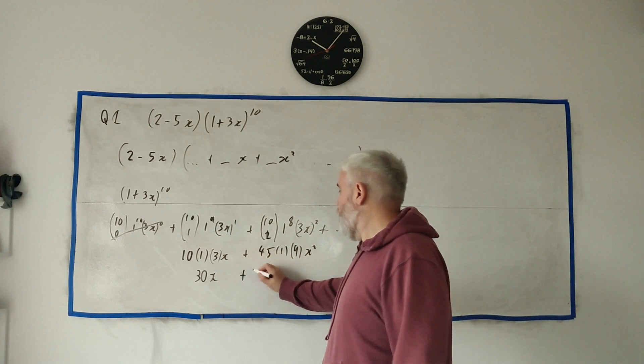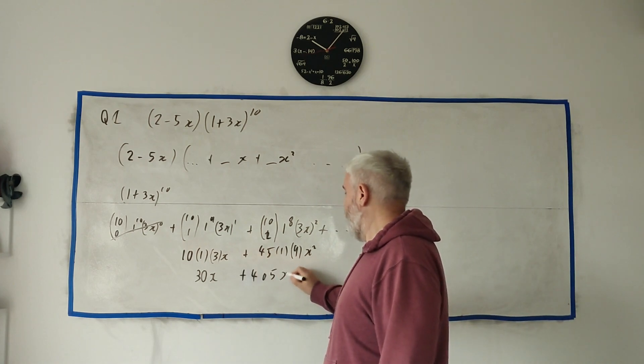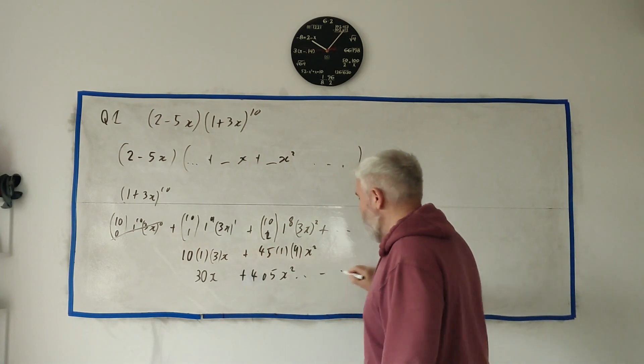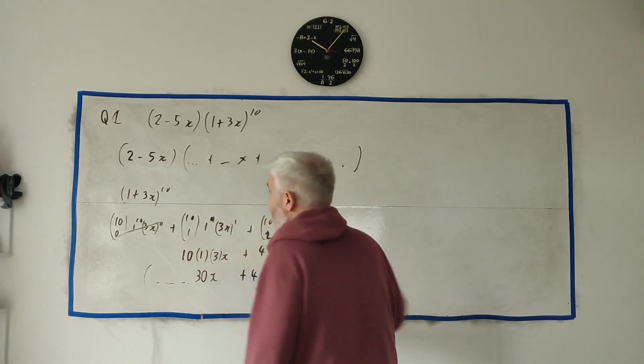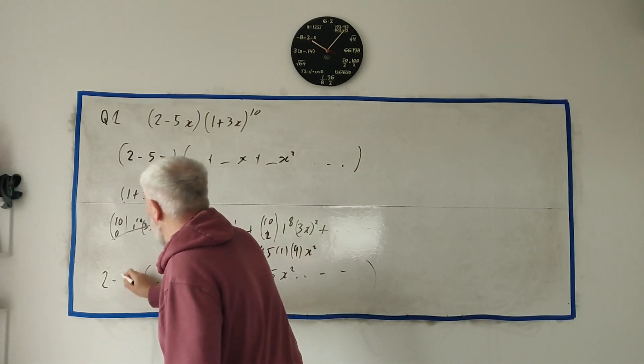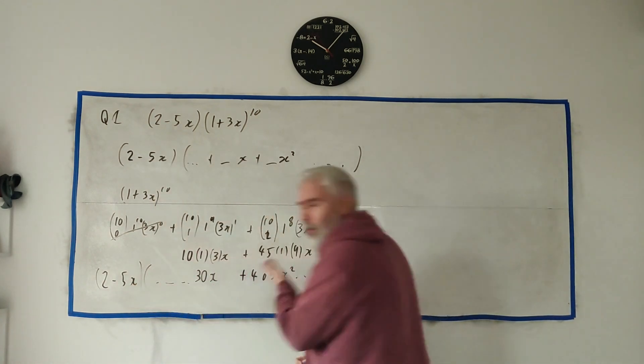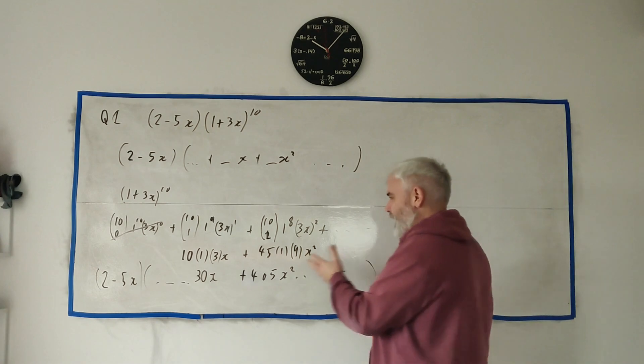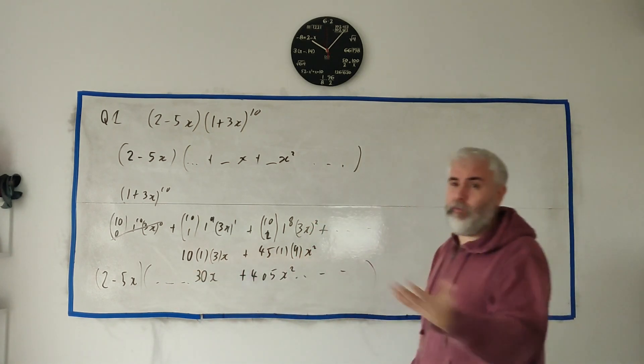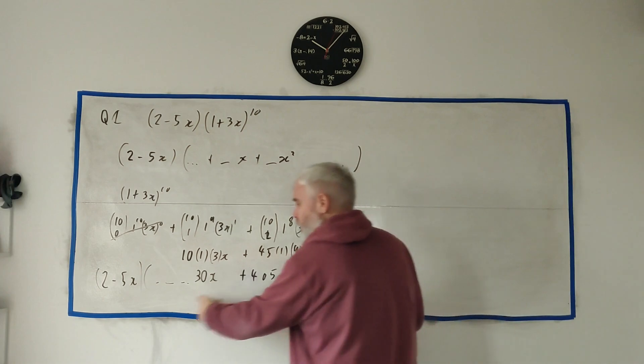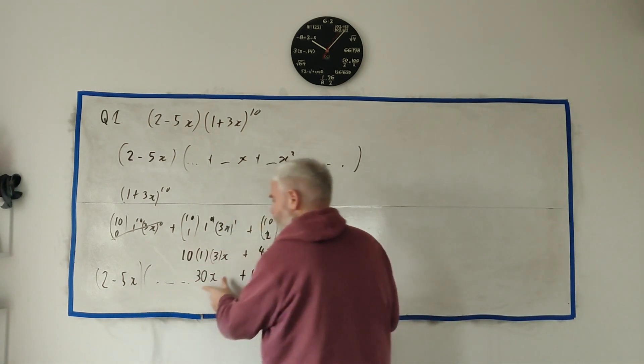But remember, there's lots of terms here, and we're going to multiply this by 2 minus 5x. But I just don't care about most of them. There's like 11 terms in here. I don't care about most of them. In fact, even these two here I don't care about. 2 times 30x, that's just going to give an x answer. I don't care.